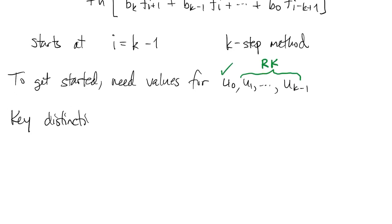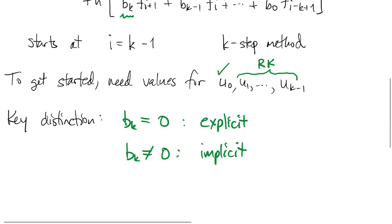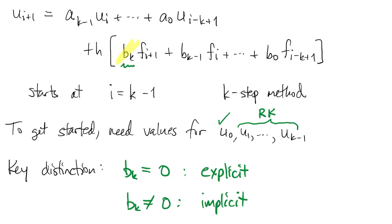There is an important distinction between different multi-step methods. If this leading bk constant is equal to zero, we say the method is explicit. If it's non-zero, we say it's implicit.